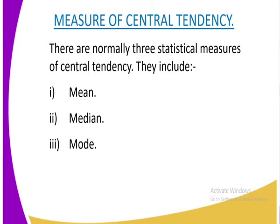Let us start with the measures of central tendency. There are normally three statistical measures of central tendency which include the mean, median, and the mode. Those are the three measures of central tendency which we shall cover in our mathematics lessons.